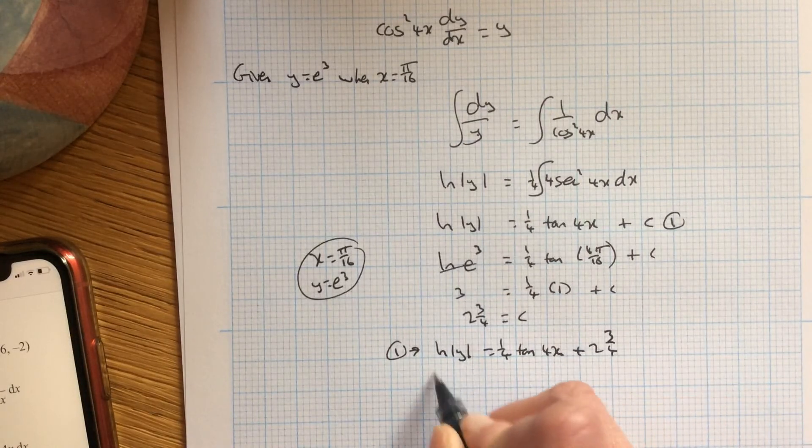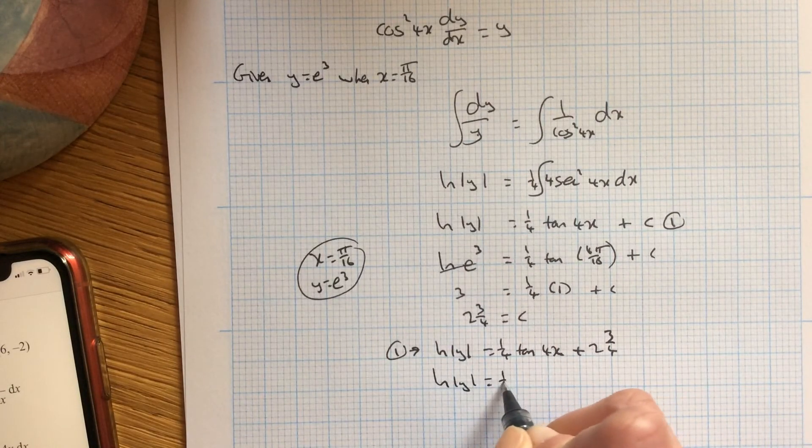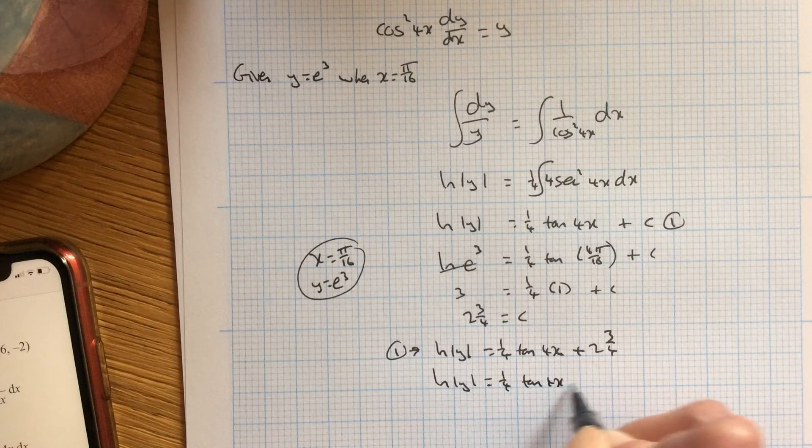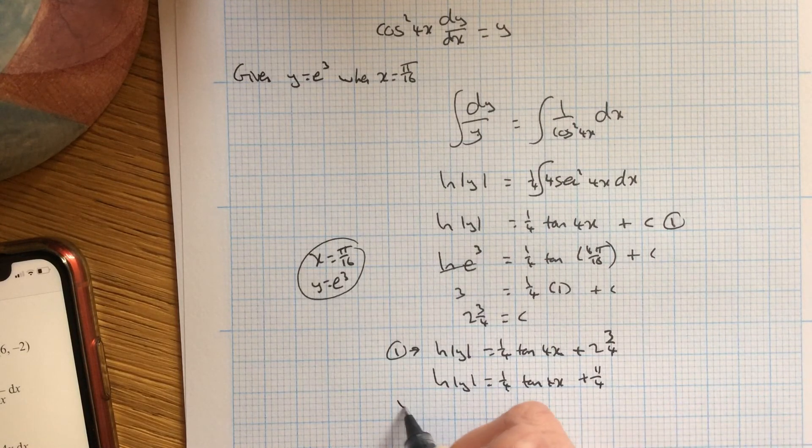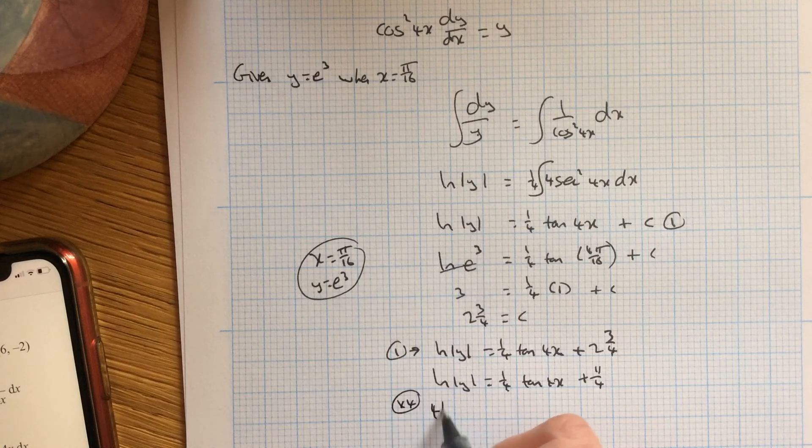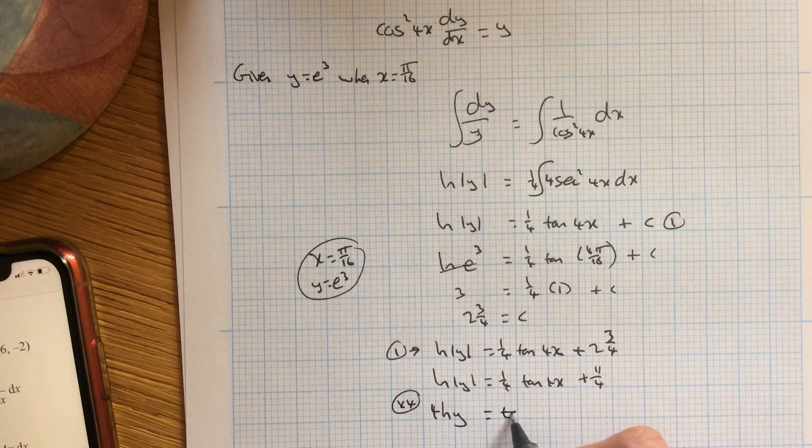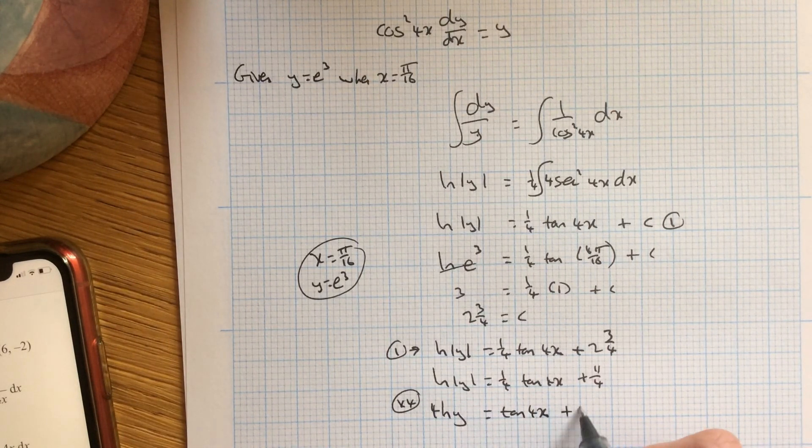Now I would be inclined to write that a little neater. So write that as an improper fraction. 2 4s are 8, add 3's 11, times everything by 4. 4 log y equals tan 4x add 11.